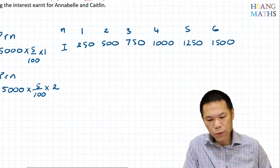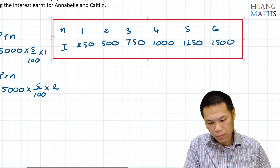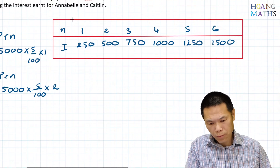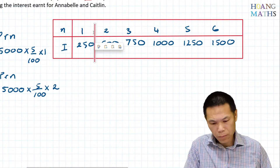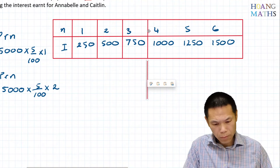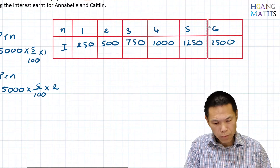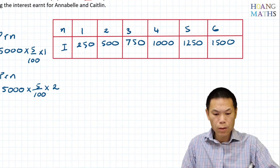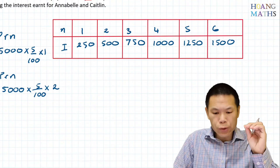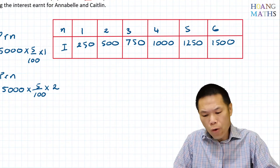Let me draw a box for it. There you go — that is the interest table for Annabelle.